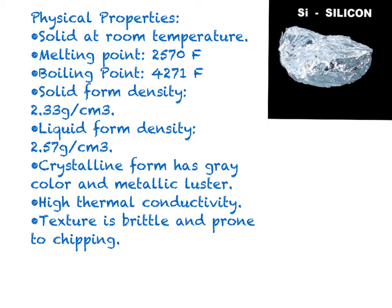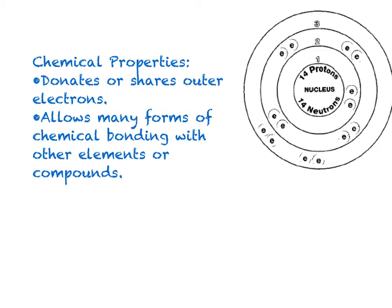The texture is brittle and prone to chipping. And now from physical properties, we've come to chemical properties. Silicon, being a metalloid, readily donates or shares its outer electrons. Under the right circumstances, this allows many forms of chemical bonding with other elements or compounds.